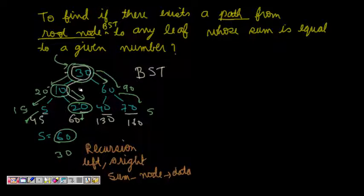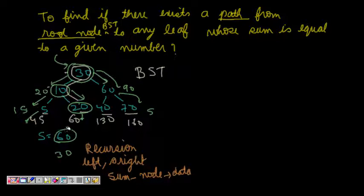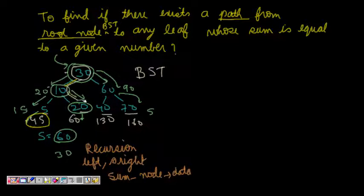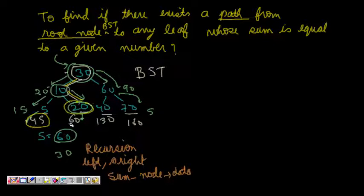So we have a binary search tree with root 30. Let's say we have to find a sum of 60. If we travel left then left, it is 30 plus 10 plus 5 which is 45. If we go left then right, it is 30 plus 10 plus 20 which equals 60 — our desired sum.